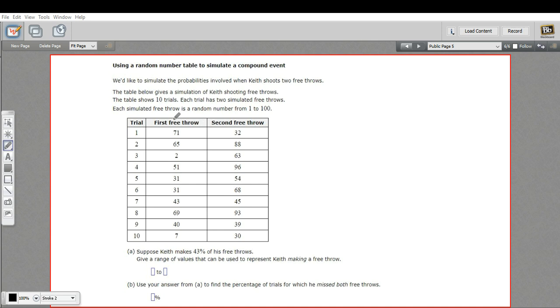We have split them up into columns for free throws. So each trial is two free throws. There's a first and a second. There's a basketball player named Keith, and Keith makes 43% of his free throws.